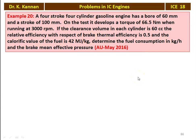The next problem: a four-stroke four-cylinder gasoline engine has a bore of 60 mm and stroke 100 mm. On test, it develops a torque of 66.9 N·m when running at 3000 rpm. If the clearance volume in each cylinder is 60 cc, the relative efficiency with respect to brake thermal efficiency is 0.5, and the calorific value of fuel is 42 MJ/kg, determine fuel consumption in kg/hr and the brake mean effective pressure. This is from the May 2016 question paper.